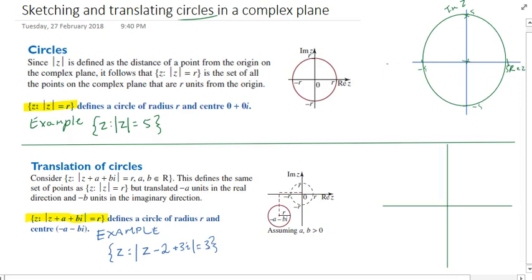We really want to know where the centre is. The centre is the key to doing these circles. So the centre is going to be opposite of this 2, opposite of this negative 3i.